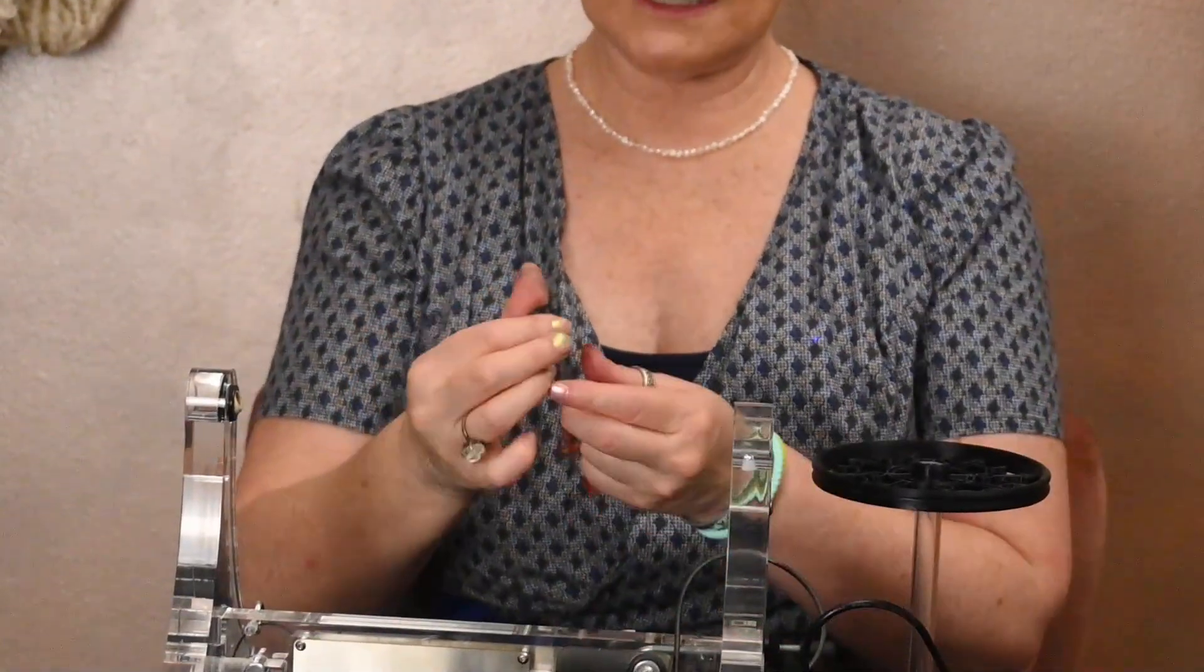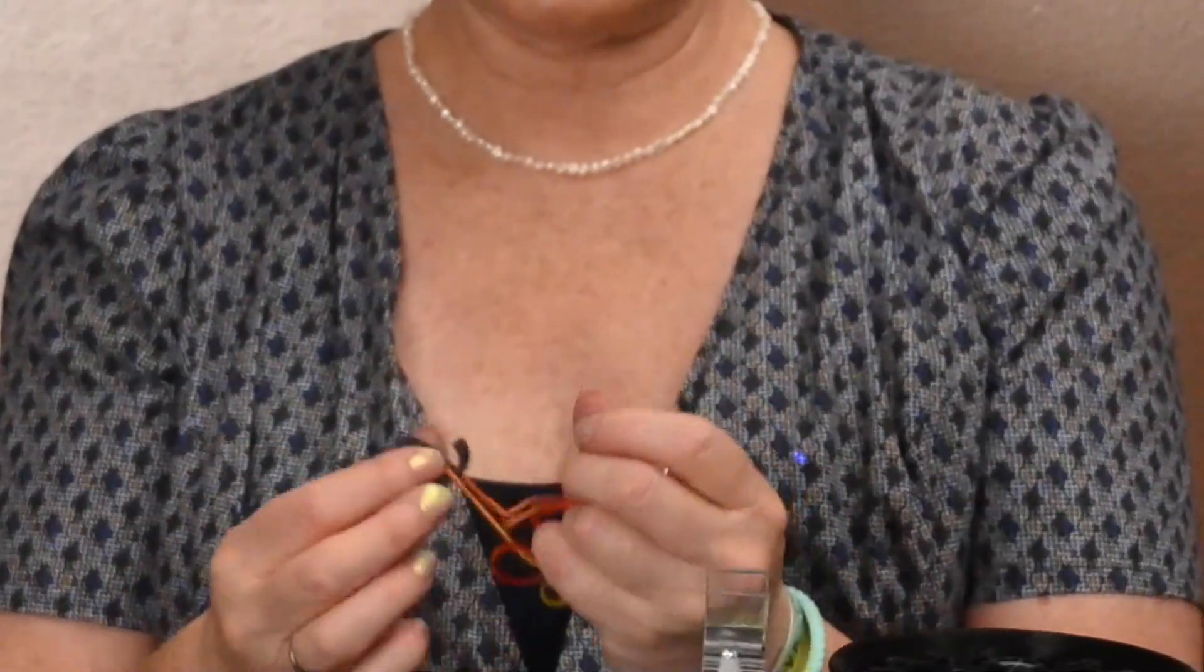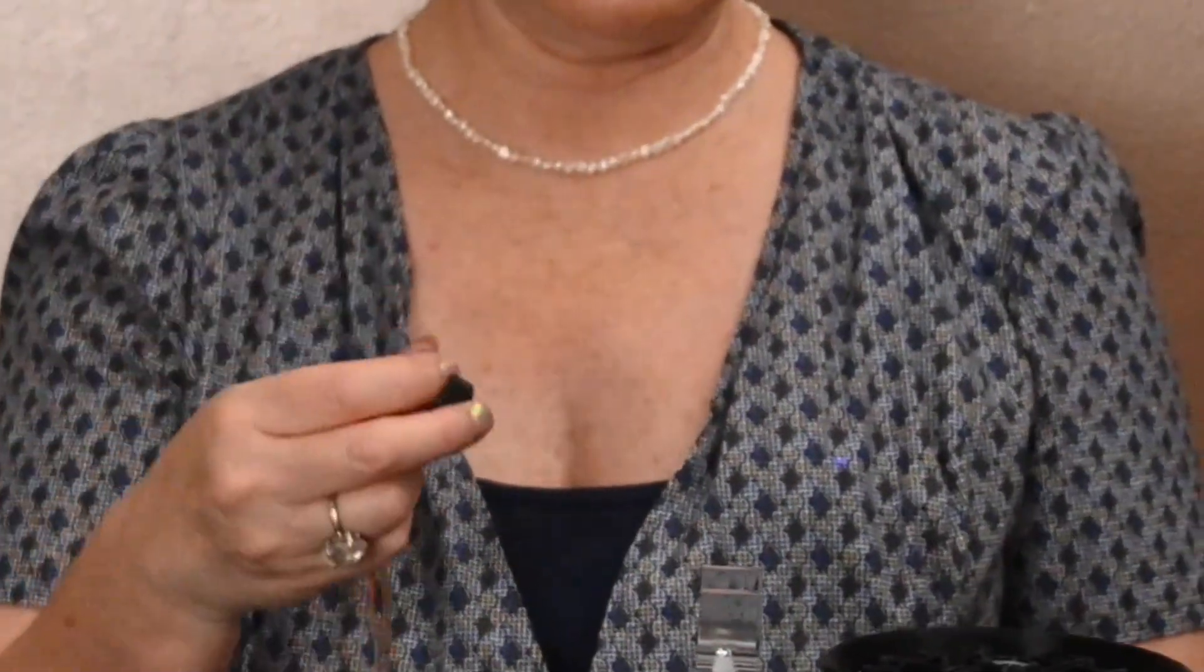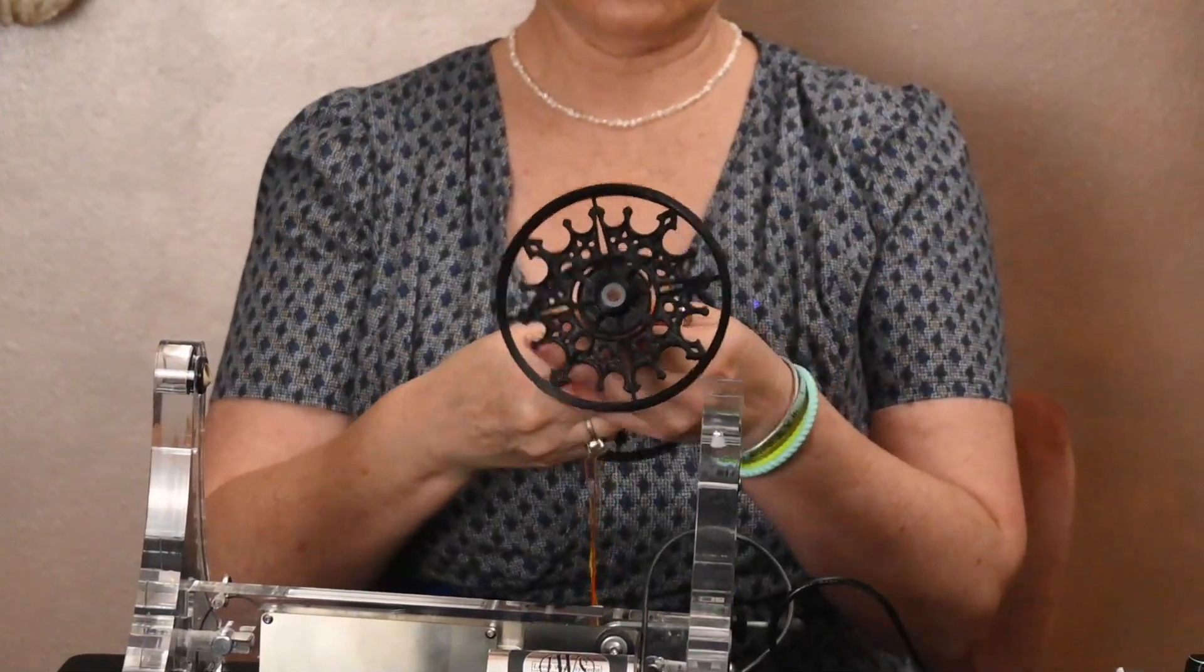So you have the choice of either running your leader yarn through the hole or simply slipping it into the groove and clipping it onto the bobbin.